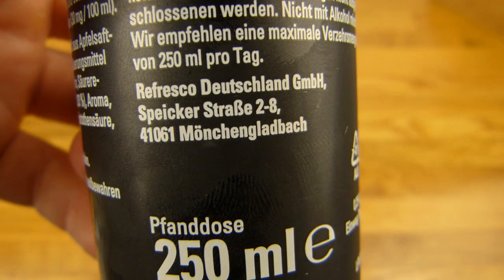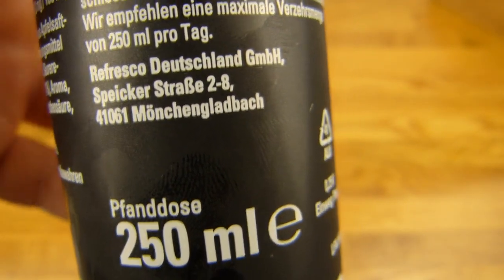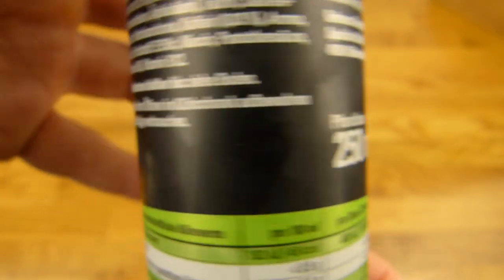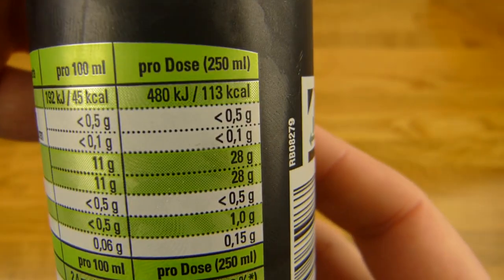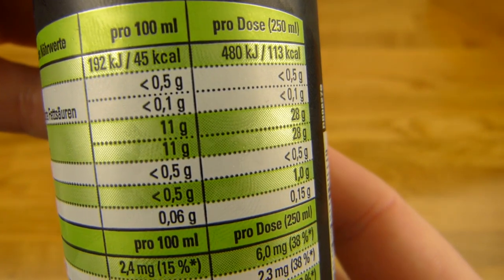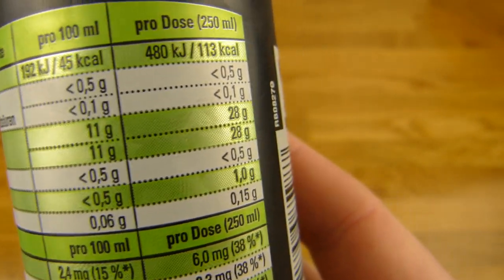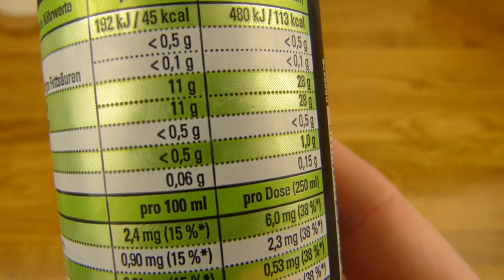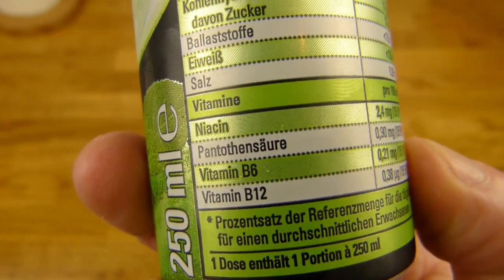Refresco, no idea. Mönchengladbach. One can has 113 calories, 45 per 100 ml, and 11% sugar. That's it. And useless vitamins. Let's see.